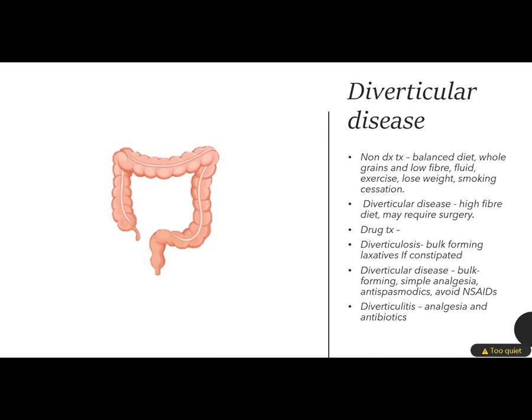These pockets can happen in the lower part of your large intestine as well. For non-drug treatment of diverticulosis, it's about the diet you eat — whole grains, low fiber initially, with a gradual increase of fiber, starting small to minimize flatulence and bloating. Drink plenty of fluid. Other recommendations include exercise, weight loss if obese, and smoking cessation. Diverticular disease is recommended a high fiber diet. Diverticulitis — the 'itis' implies infection. Diverticular disease may require surgery if it gets significantly worse.